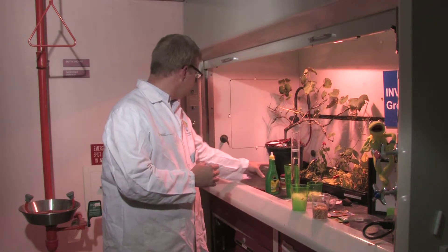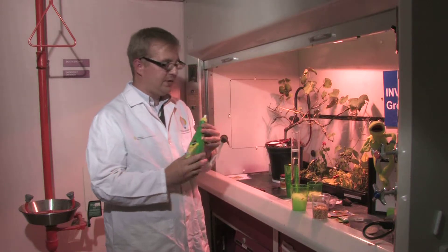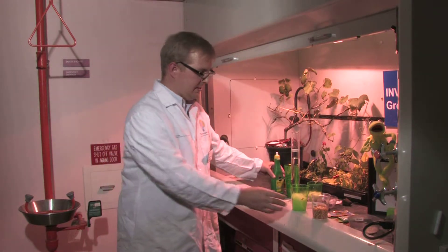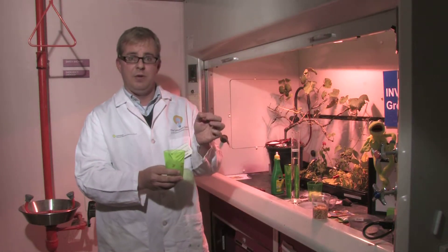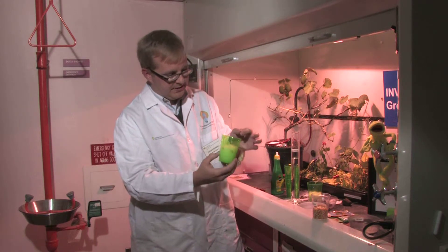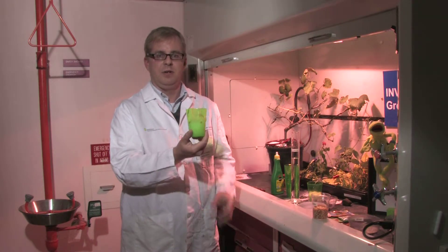If you don't want to use the liquid, they also have these little plant sticks that are full of the nutrients that the plants need. You can just simply stick them on the side of your garden, and that will provide nutrients for your growing plants.